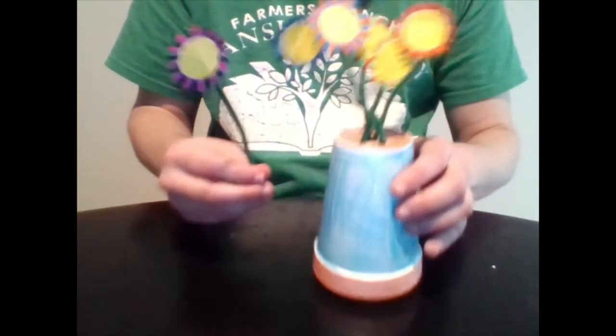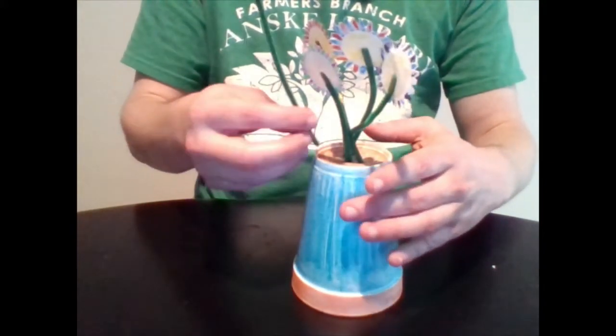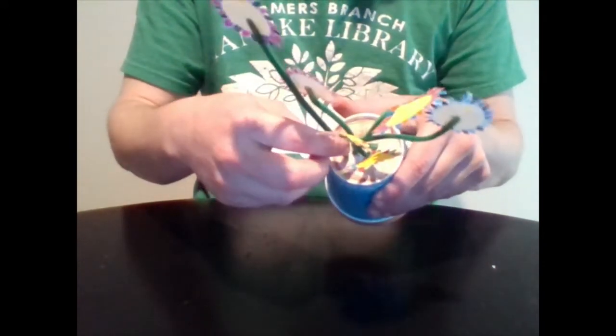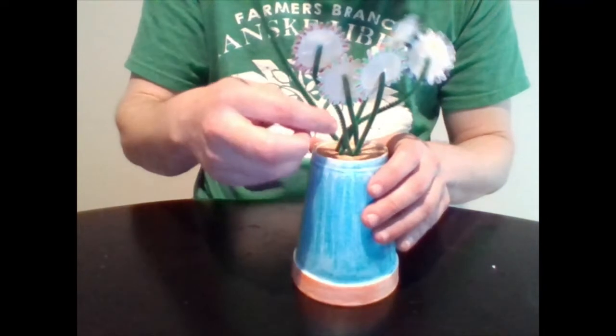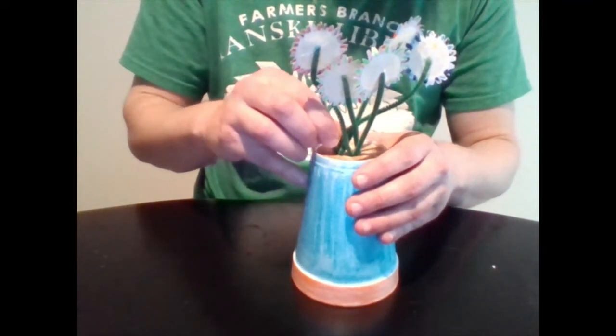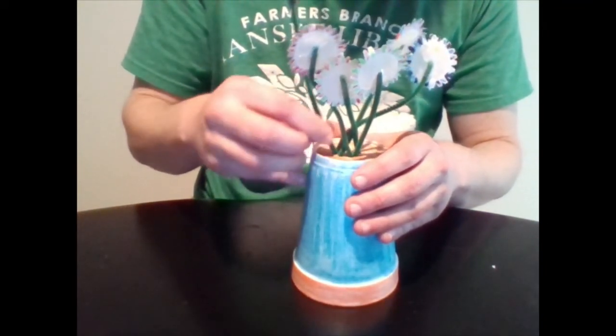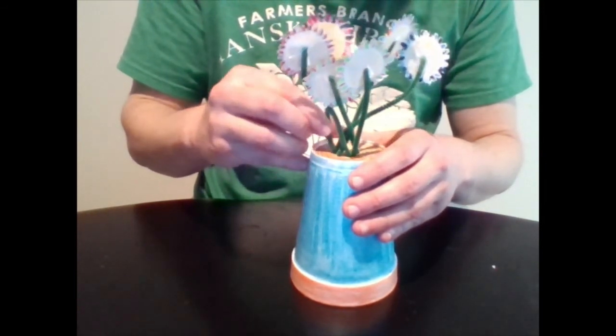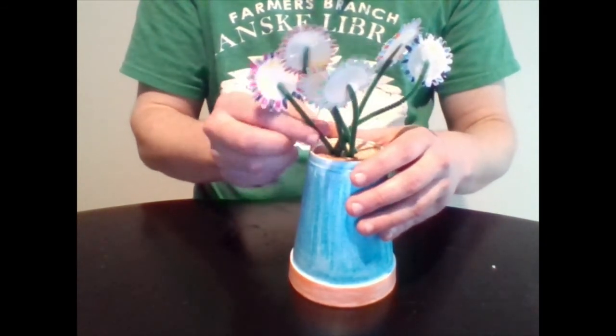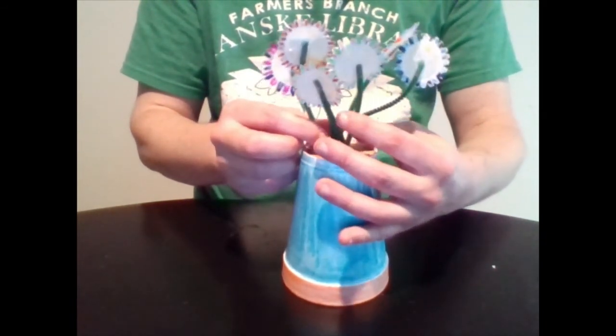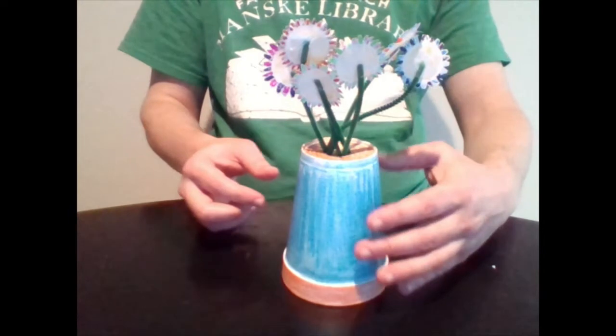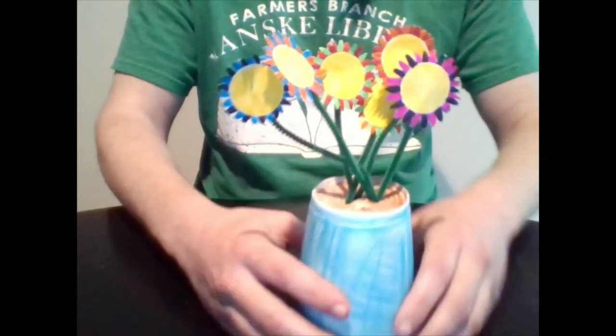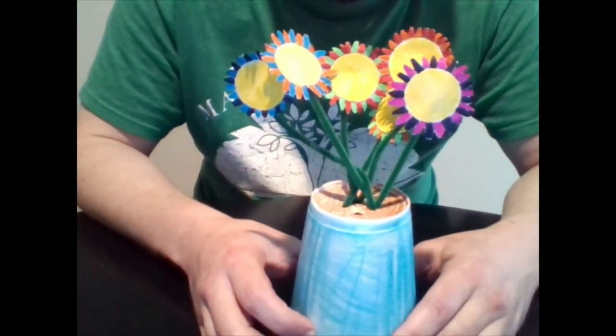When you're done with all the coloring and cutting out and taping you should have a flower that looks kind of like this. Then you're going to take the flower and put it, stick it into the top of your cup. This may take a few tries, it can be a little tricky. When you're done sticking all your flowers in you got your bouquet.